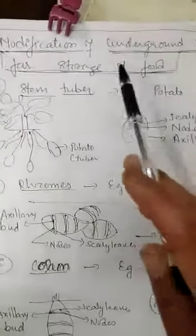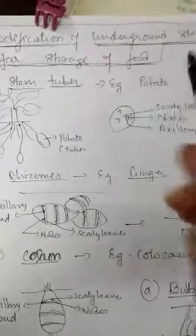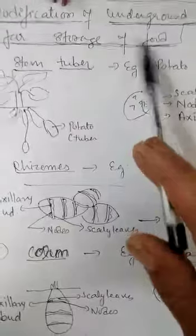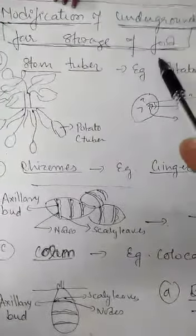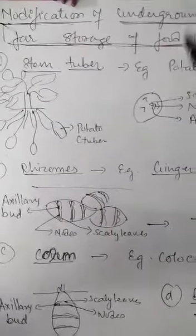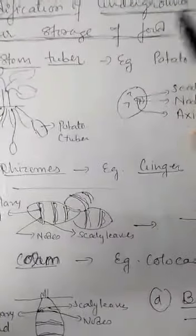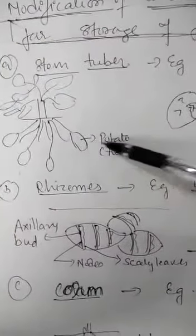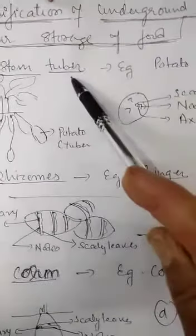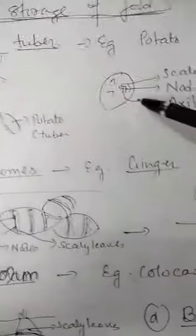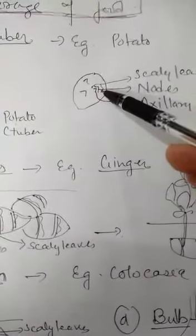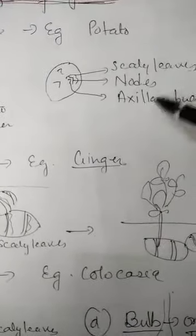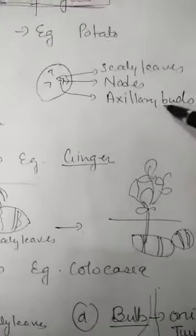Today we are covering the modification of underground stem, specifically how underground stems modify for the storage of food. As I told you, even if the stem is underground, nodes and internodes should be present. The example is potato, which comes under the category of stem tuber. It is called a stem because it bears nodes — the 'eyes' of the potato are actually its nodes, and on each node there is a scaly leaf.